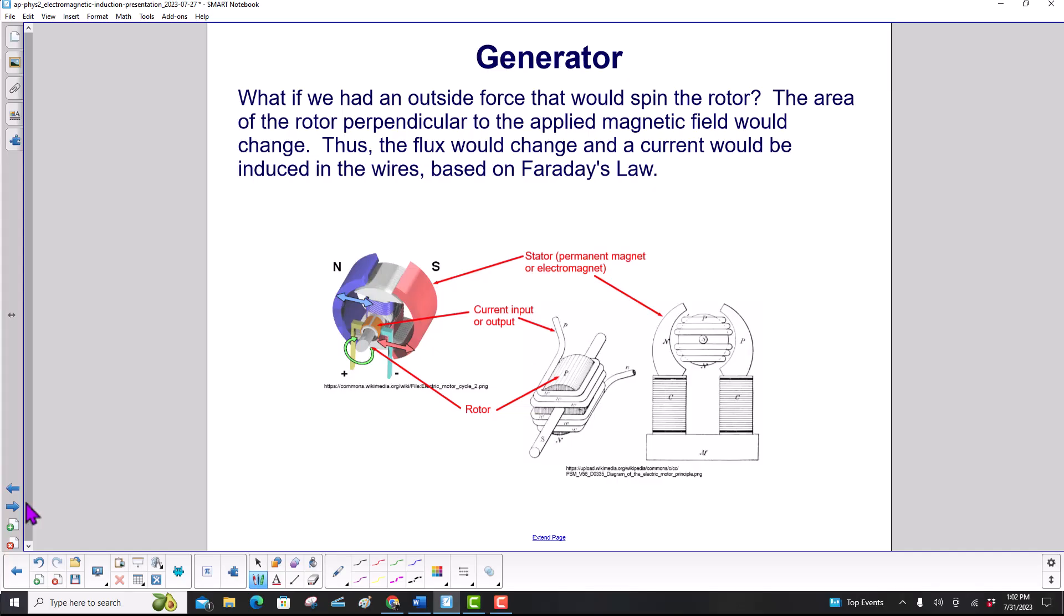What if we had an outside force that would spin the rotor? The area of the rotor perpendicular to the applied magnetic field, coming from here, would change. Thus, the flux would change, and a current would be induced in the wires, based on Faraday's law.